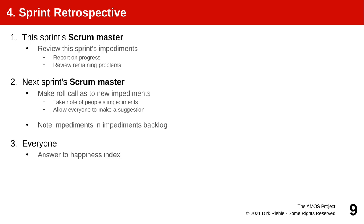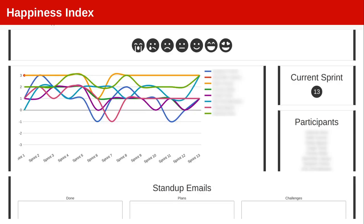And then as the last step in the retrospective, you provide the happiness index. The happiness index is a little feedback tool where everyone tells everyone else anonymously how happy they are with the project, and if things apparently go totally out of whack, then you can discuss it. But in general, if things work out reasonably well, you will get a curve like you can see here — left to right are the sprints, and the different lines are the different people.